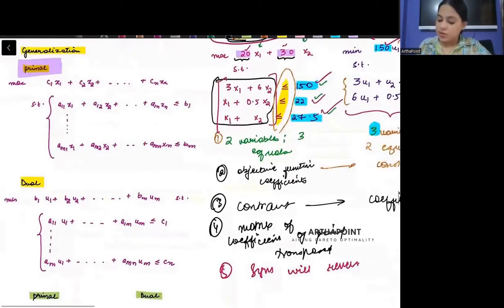This is what we have done here. Look, here I have N variables, so I will have N equations. Note that here I have M equations, so here I will have M variables.